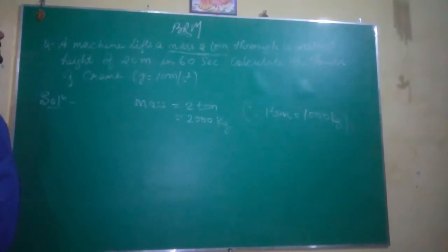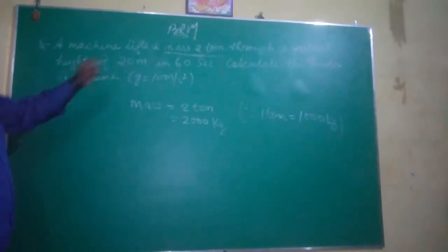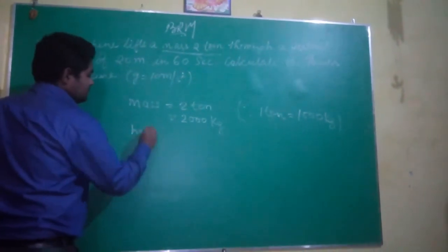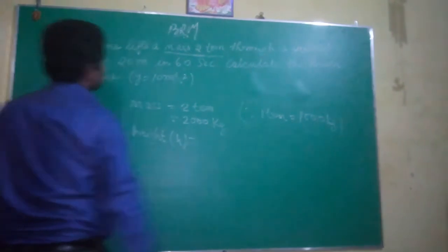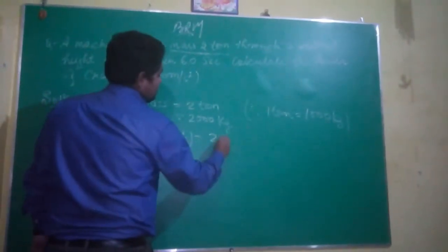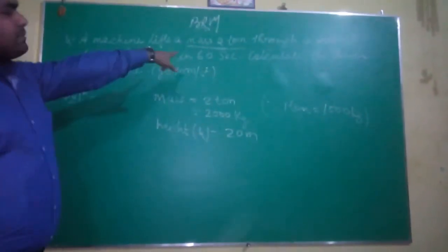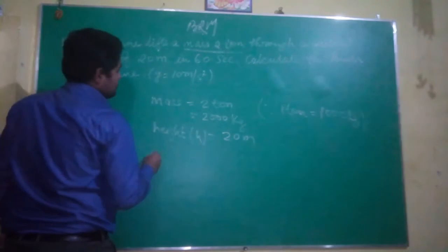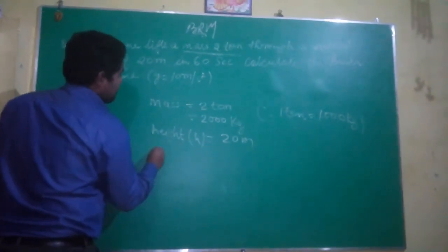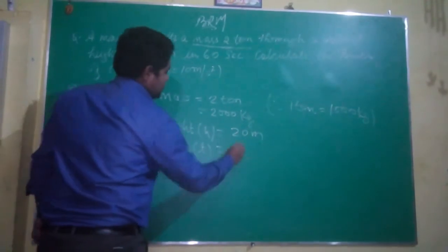Next is the given height of 20 meters, so H equals 20 meters. It is also in SI unit, and the time is also in SI unit, so no need of changing. Time is 60 seconds.